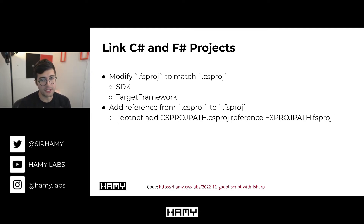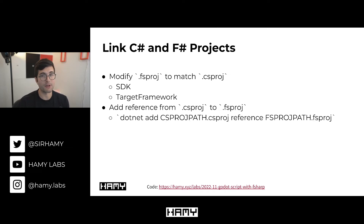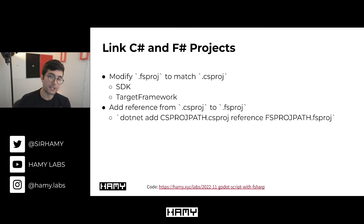There are two things we're going to need to do to actually make this work together. The first one is we need to actually modify the fsproj, which tells F-sharp how to actually build, so that it matches the csproj. The reason we need to do this is so that both our C-sharp and our F-sharp are going to be building towards the same runtime so that they can actually compile and run together. Once we've done that, we actually need to add a reference from the csproj to the fsproj, so that C-sharp knows that it needs to build the F-sharp in order for itself to be able to run.